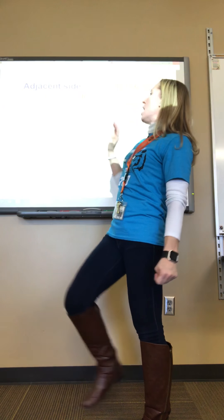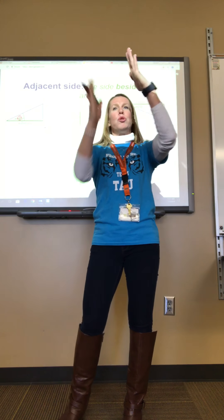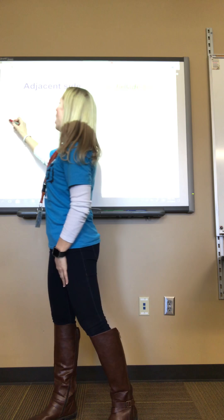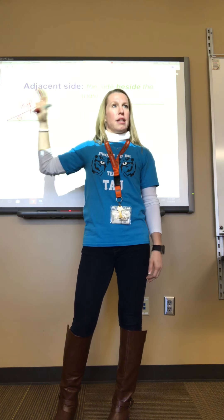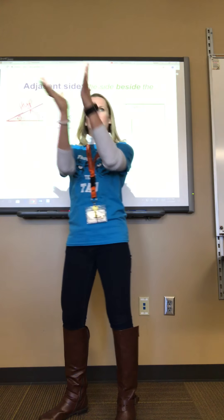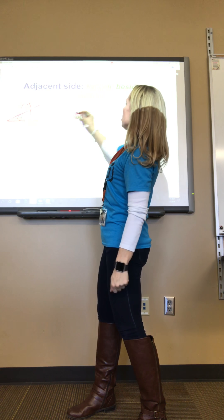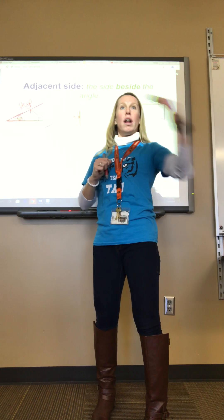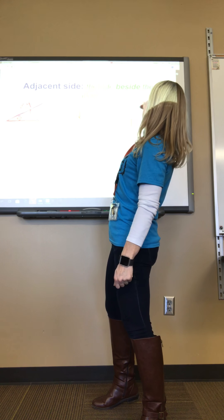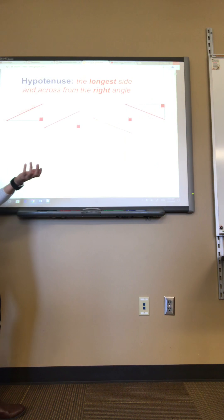Another type of side is the adjacent side — this is probably the hardest one to figure out. If you have your angle, there are actually two sides that touch it, but one is always the hypotenuse. The other side is the adjacent side. So in all our triangles we have an opposite side, an adjacent side, and a hypotenuse side.